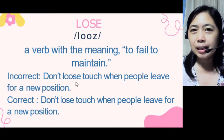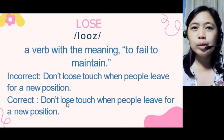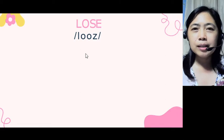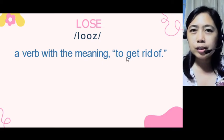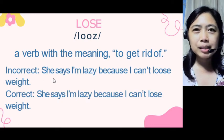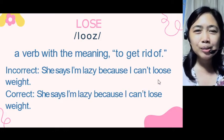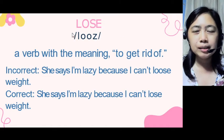For the definition 'to fail to maintain,' we use the word 'lose' with only one letter O. A third use of 'lose' as a verb means to get rid of. For example: 'She says I'm lazy because I can't lose weight.' The correct spelling here is L-O-S-E, because we are using the word as a verb.